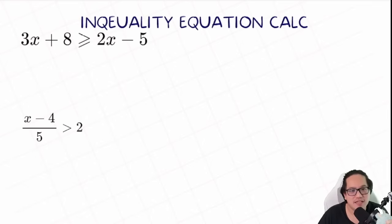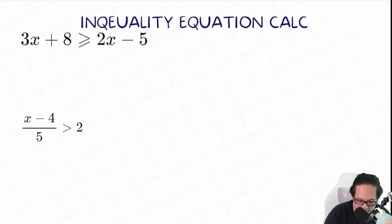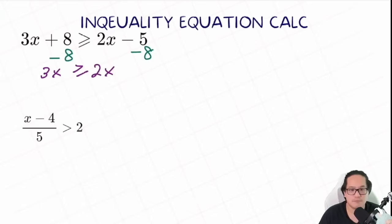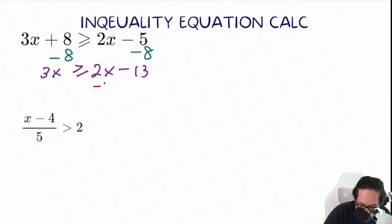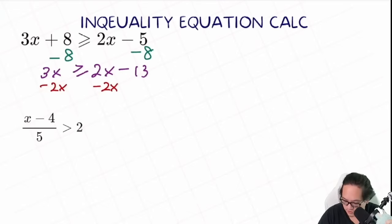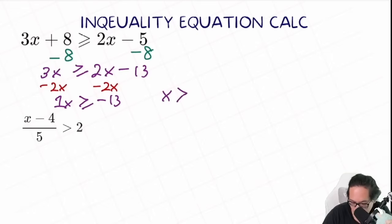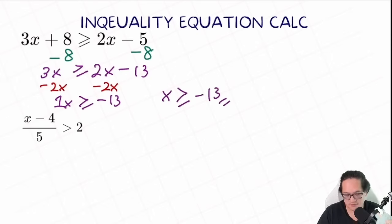Next question: 3x plus 8 larger or equal to 2x minus 5. First, we minus 8 on both sides. We get 3x larger or equal to 2x minus 5 minus 8, equal to minus 13. Next step, we minus 2x on both sides, moving all the x's together. So 3x minus 2x equals 1x, larger or equal to minus 13. Since 1x is just x, the final answer is x is larger or equal to negative 13.